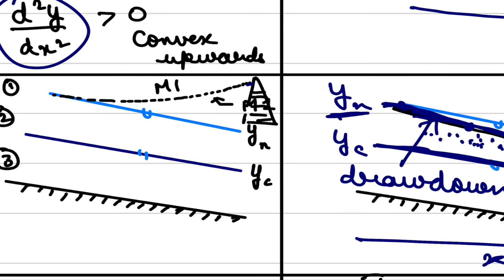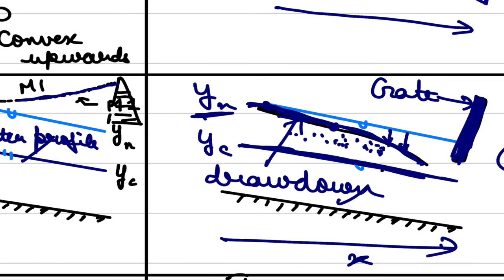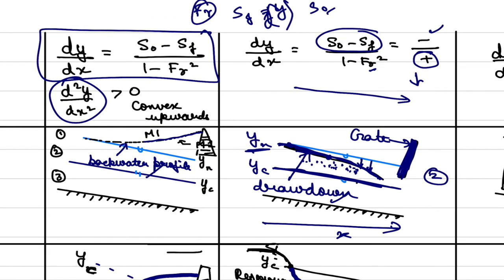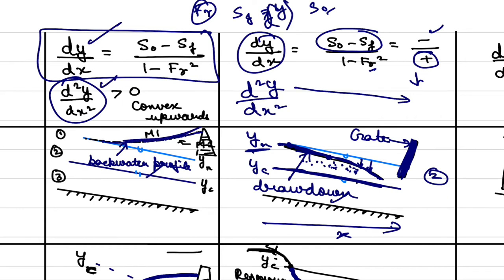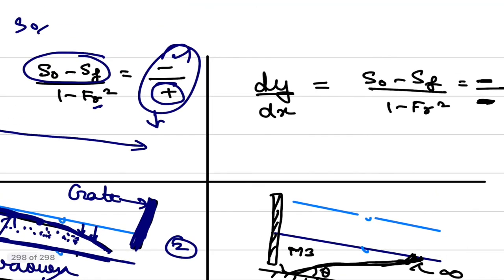Where dy/dx is greater than zero we trace a backwater profile; where it is less than zero we trace a drawdown profile. For M profiles, the sign of dy/dx and the sign of d²y/dx² are the same. Since in the M2 case dy/dx is negative, d²y/dx² is also negative, meaning the profile is concave downward or convex upward.